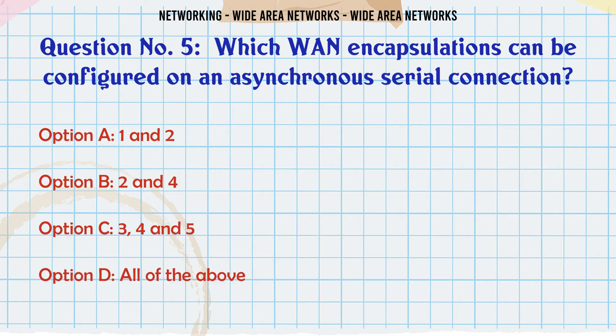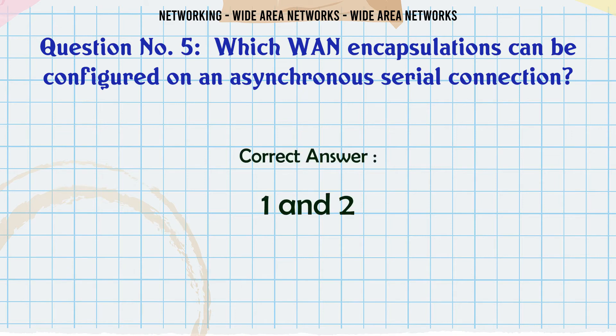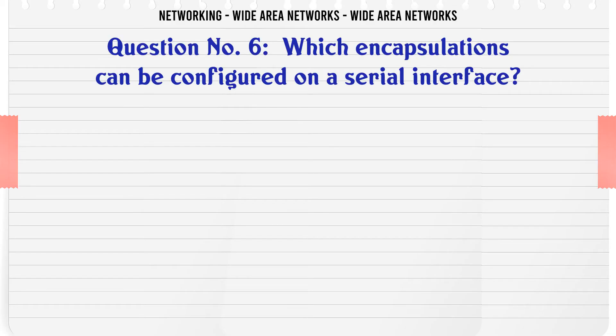Which WAN encapsulations can be configured on an asynchronous serial connection? A. 1 and 2. B. 2 and 4. C. 3, 4, and 5. D. All of the above. The correct answer is A: 1 and 2.